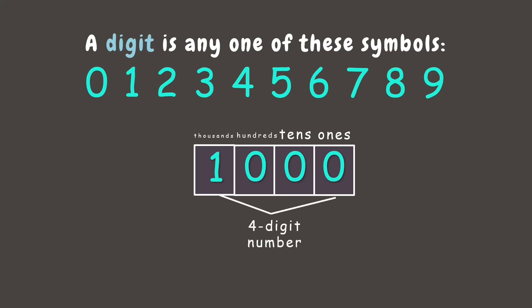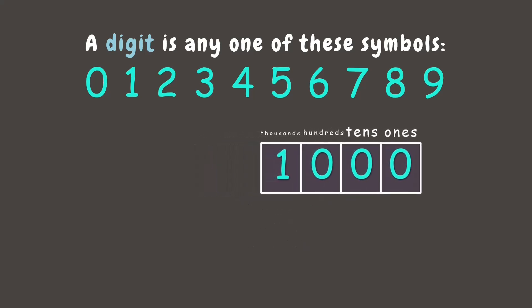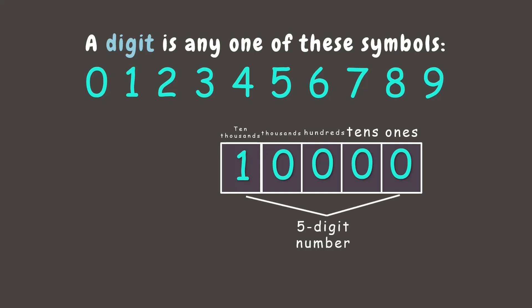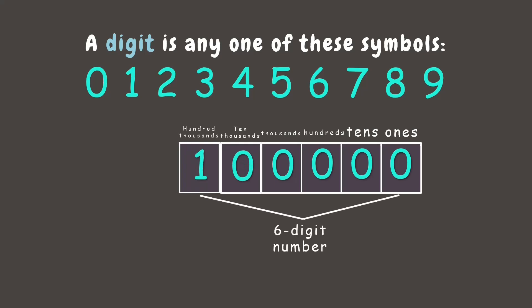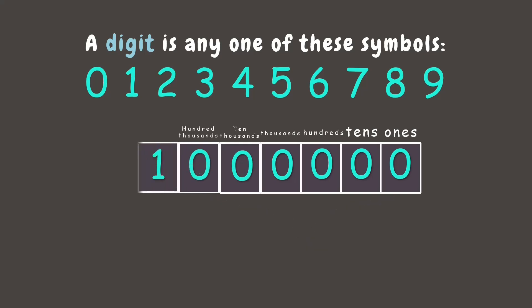Next, if we keep on counting, we will eventually reach ten thousand. Now we have the ten thousands place and it has five digits, then a hundred thousands place which has six digits, and finally the millions place which has seven digits.